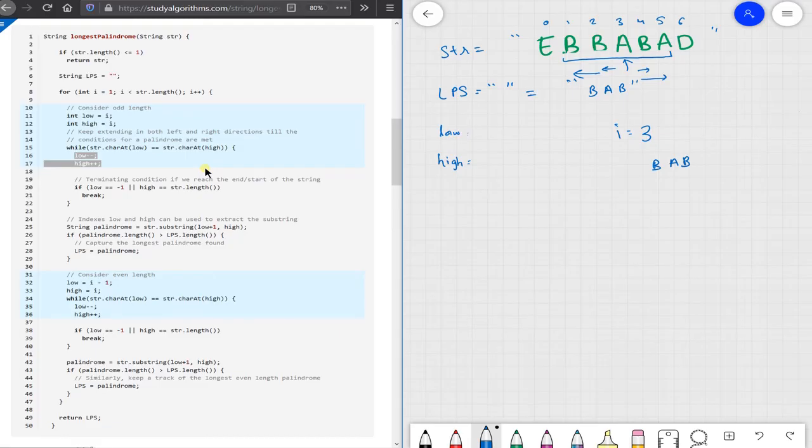Similarly, if you try to consider the even length. Now low equals to 3 minus 1, that would be 2. And high equals to 3. So the substring you are looking at is ba. Now this is not valid. So we won't be doing anything about it.